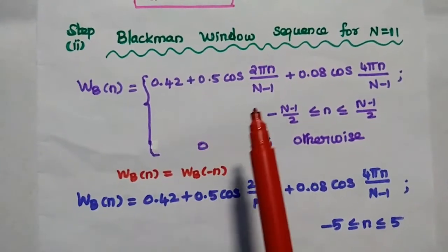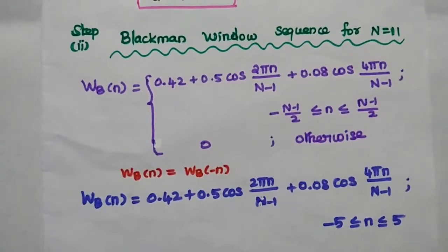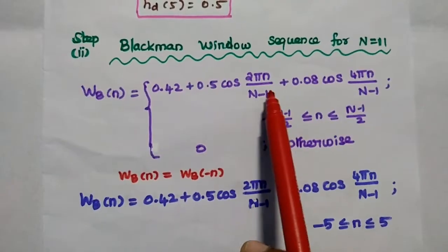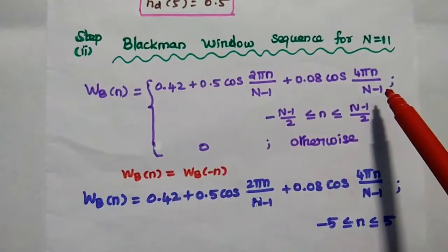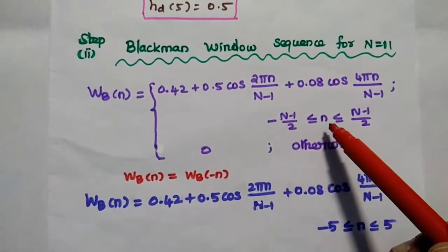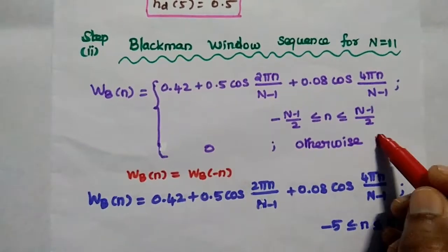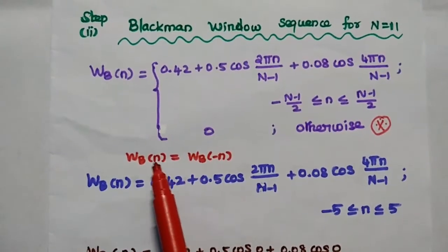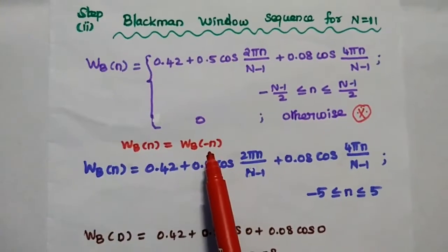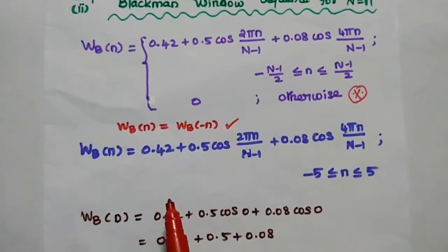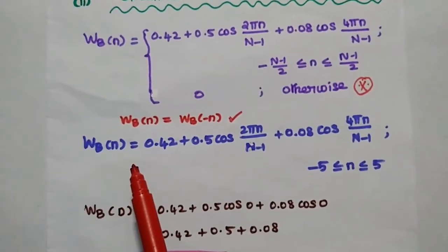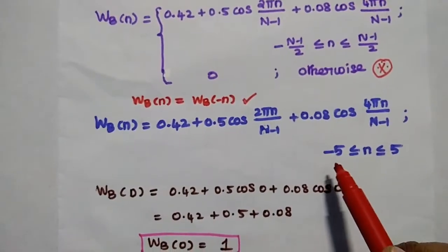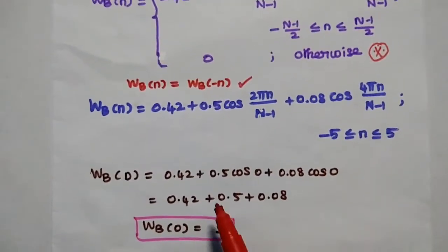The second step is to obtain the Blackman window sequence for N = 11 samples. The Blackman window sequence Wb(n) is given by: 0.42 + 0.5·cos(2πn/(N−1)) + 0.08·cos(4πn/(N−1)), for −(N−1)/2 ≤ n ≤ +(N−1)/2, and 0 otherwise. This Blackman window sequence is a non-causal system with the property Wb(n) = Wb(−n). We find values from n = −5 to +5.